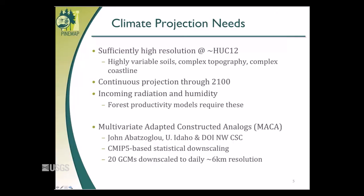We have a complex topography and a complex coastline that plays interesting things with precipitation patterns. We also have a lot of hazards — fire risk, pest risk, and high wind from tropical storm risk. Another requirement was continuous projections from now through 2100, as well as historical periods for calibration and baselines. In addition to precipitation and temperature, they needed incoming radiation and humidity because forest productivity models require those for calculating vapor pressure deficit and actually growing the trees.